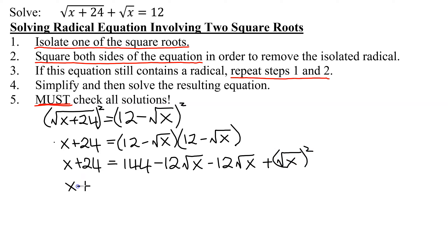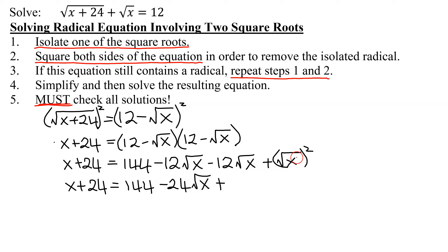So I get x plus 24 equals 144. These two middle terms are like terms: negative 12 added to negative 12 is negative 24 times the square root of x. And the square root of x squared is just x. So now I've completed step 2, and step 3 says if this equation still contains a radical — which it does — repeat steps 1 and 2.